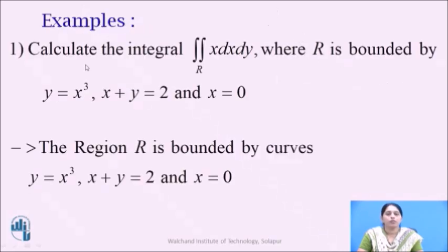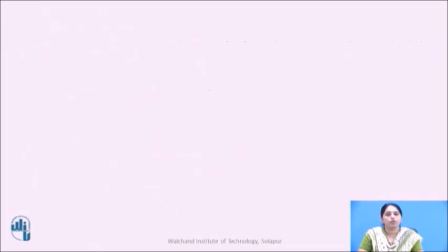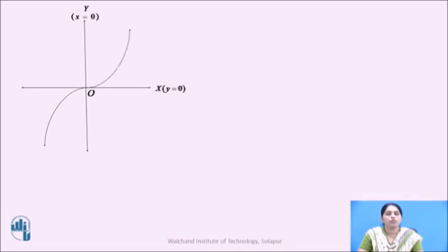Now, let us go for examples. Calculate the double integral over R of x dx dy, where R is bounded by y equals x cubed, x plus y equals 2, and x equals 0. It is given that the region R is bounded by these curves. First, we will draw the region of integration, then find the limits of integration, and then evaluate the integral. Let us draw the x-axis (y equals 0) and y-axis (x equals 0), which is one of the curves bounding the region. The x-axis and y-axis intersect at the origin O. Now let us draw the curve y equals x cubed, which passes through O.